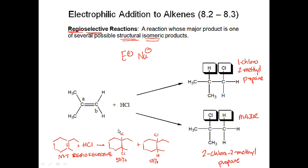Those two parts always have to be fulfilled: the 'regio' part (structural isomers) and the selectivity. Reactions that involve Markovnikov additions to unsymmetrical alkenes, if they produce a major product, are regioselective. We'll spend a lecture day going through all the different reactions and determining whether they're regioselective or stereoselective.